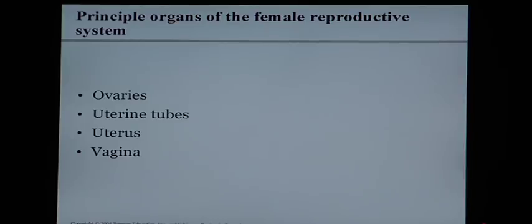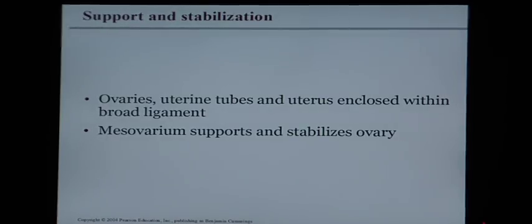The main organs of the female reproductive system are the ovaries, the uterine tubes (also called fallopian tubes), the uterus, and the vagina or vaginal canal. The ovaries, uterine tubes, and uterus are enclosed within a broad ligament, and the mesovarium supports and stabilizes the ovaries.